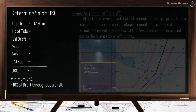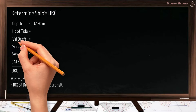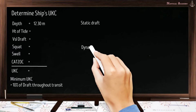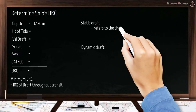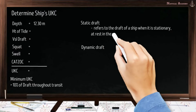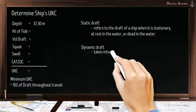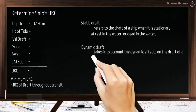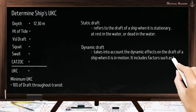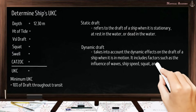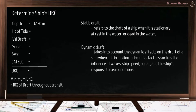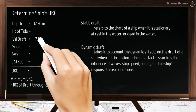Let us proceed to the vessel's draft. We have the static draft and the dynamic draft. Static draft refers to the draft of a ship when it is stationary — at rest or dead in the water. Dynamic draft takes into account the dynamic effects on the draft when the ship is in motion, including the influence of waves, ship speed, squat, and the ship's response to sea conditions. The draft we will use in this calculation is the static draft, and we will take the ship's deepest draft. Let us assume the ship's deepest static draft is 7.50 meters.